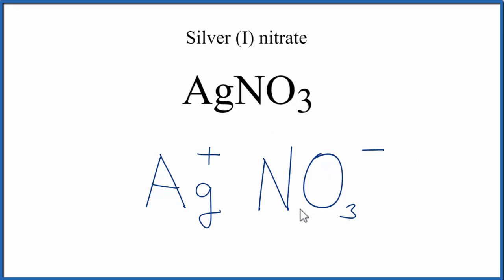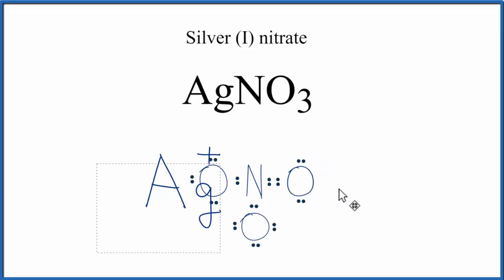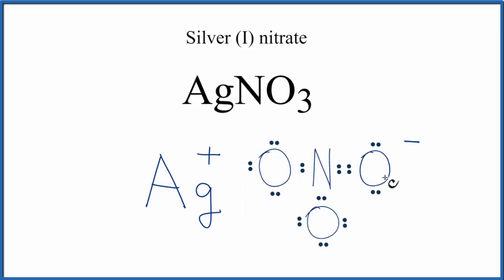Let's replace this NO3 minus here with the Lewis structure. So now we have a Lewis structure for the nitrate ion, and then we have our silver cation here.